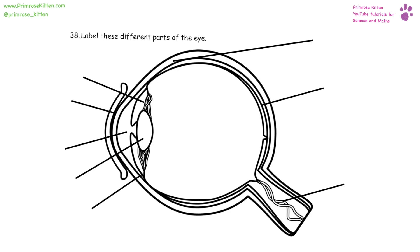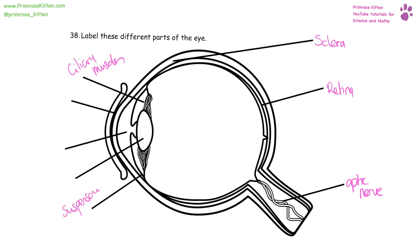Label these different parts of the eye. The white of the eye that goes all the way around is the sclera. At the back we have the retina, going to the brain via the optic nerve. We have the ciliary muscles, which are connected by the suspensory ligaments. The lens, the pupil, and the cornea.